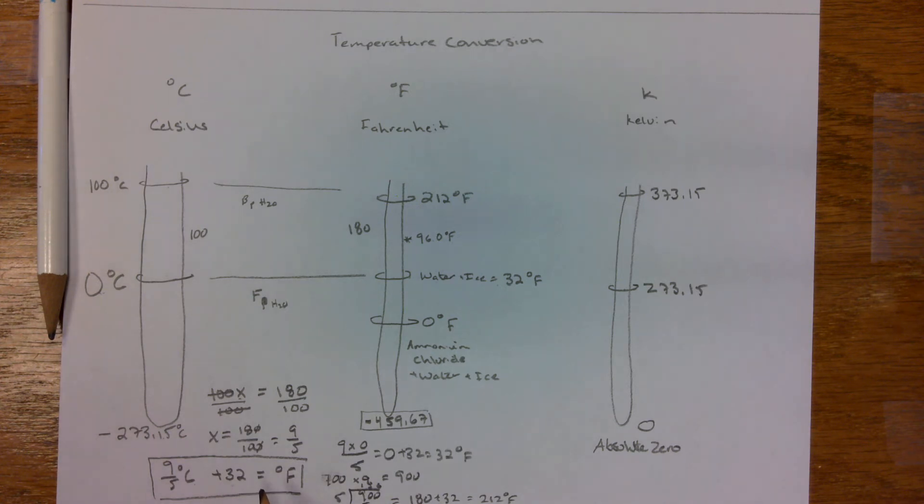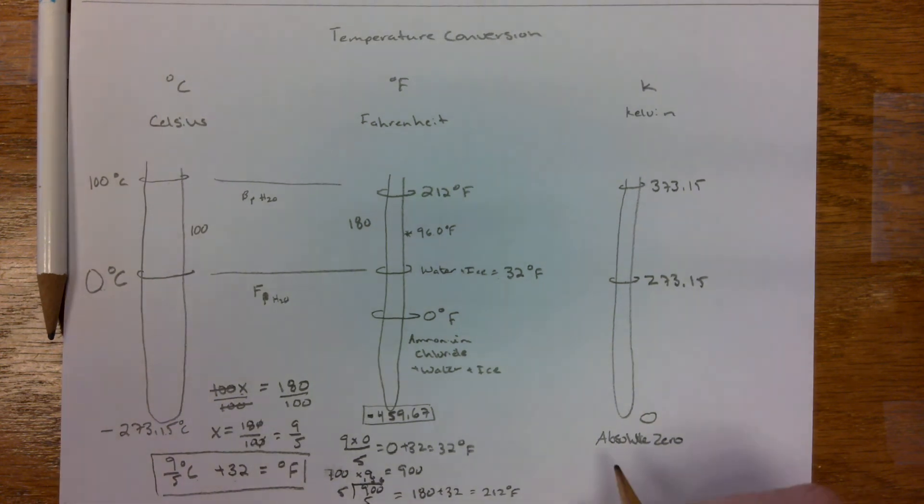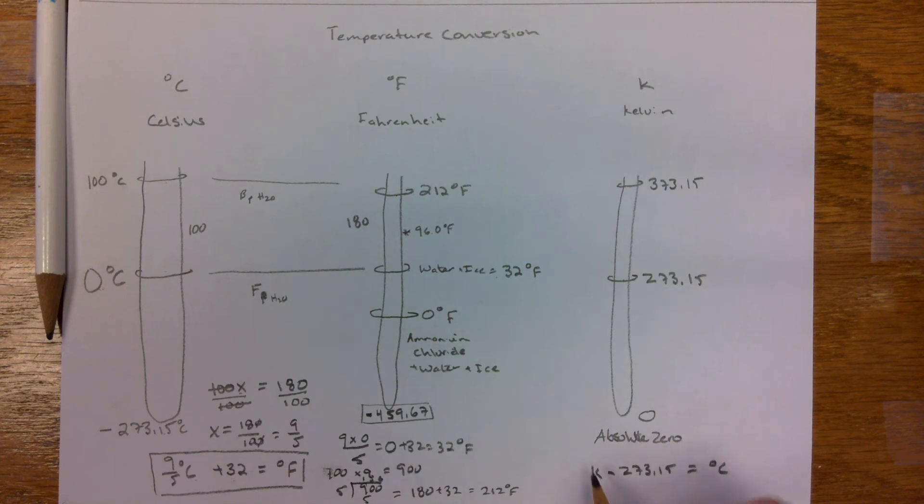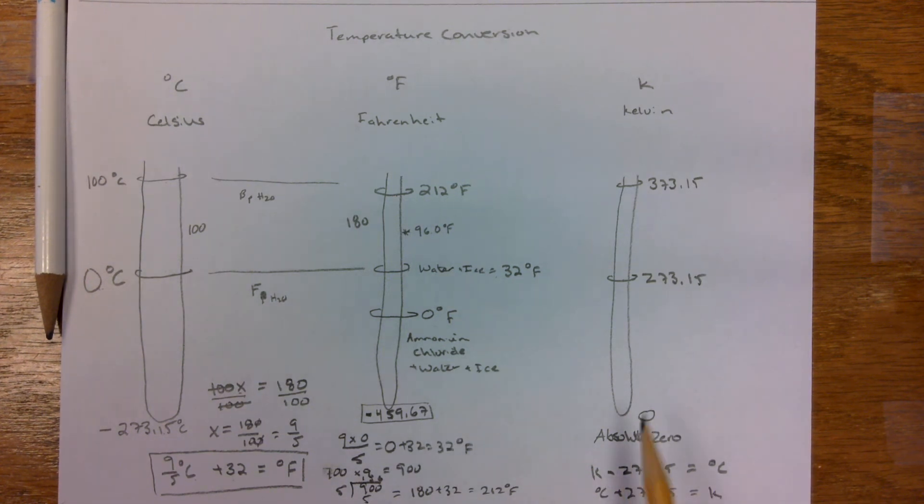So, remember your formula here, and to go from Celsius to Kelvin, or vice versa. What we'll do is you'll take Kelvin minus 273.15 equals Celsius, or we can do it the other way around, Celsius plus 273.15 gives you Kelvin. There's no degree sign with Kelvin.